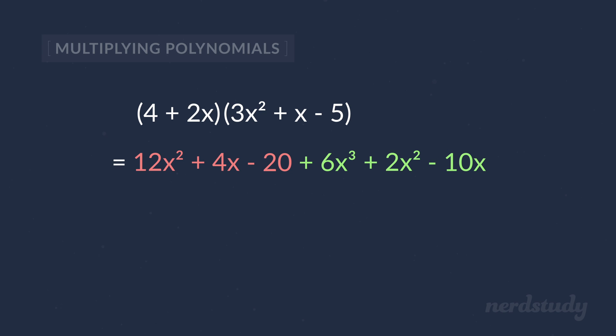So if we add all of this together, we get 6x cubed plus 14x squared minus 6x minus 20. Great.